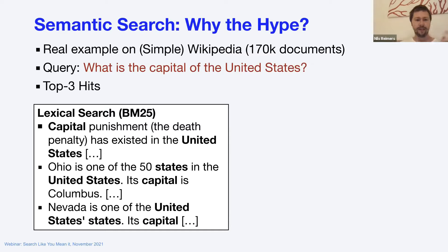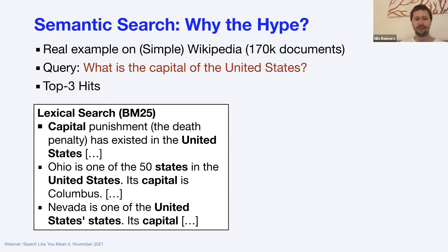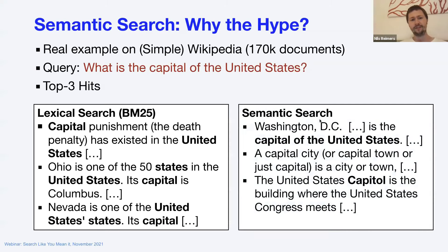The top hit is 'capital punishment,' because it talks about capital and a lot about the United States, but doesn't mention Washington D.C. The second hit is Ohio — it talks about states, the United States, and the capital of Ohio, but again not relevant. The third hit is about Nevada — also a state in the United States with a capital — but none of these answer the question. The user experience from lexical search is really, really bad.